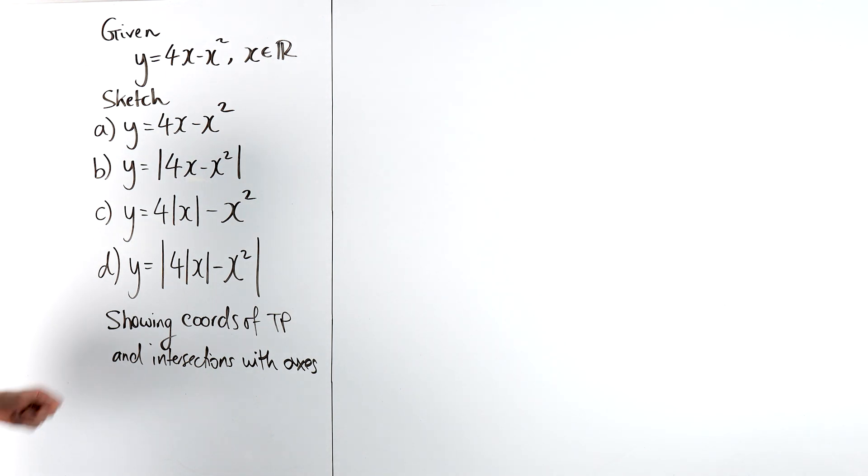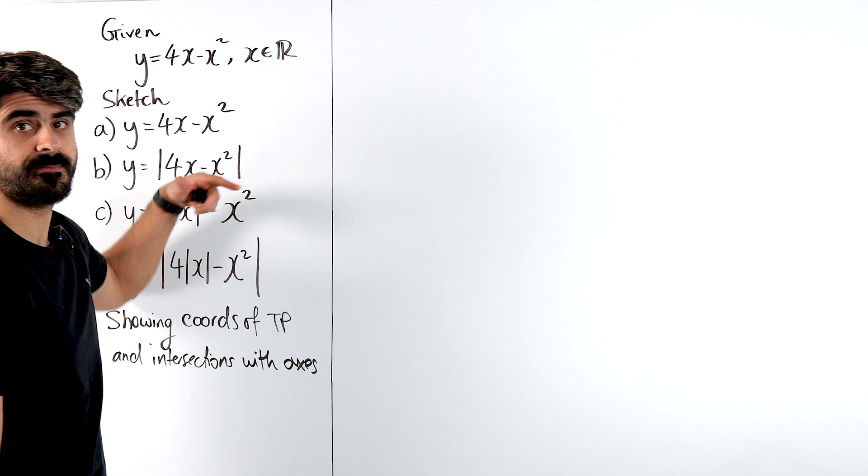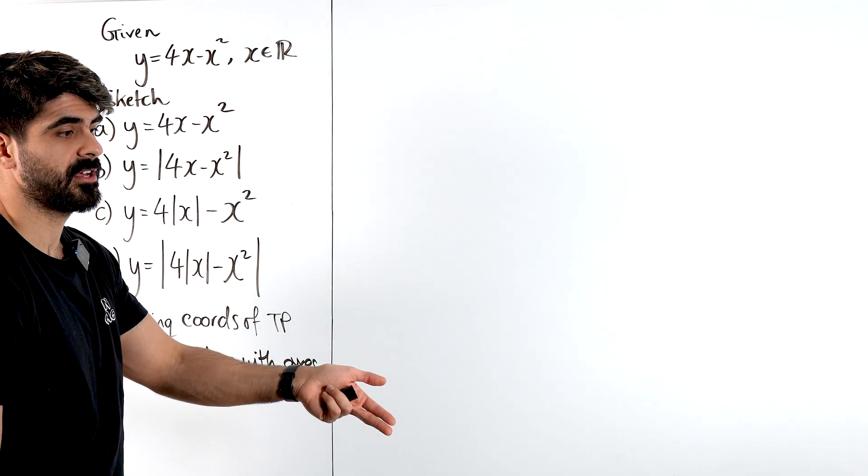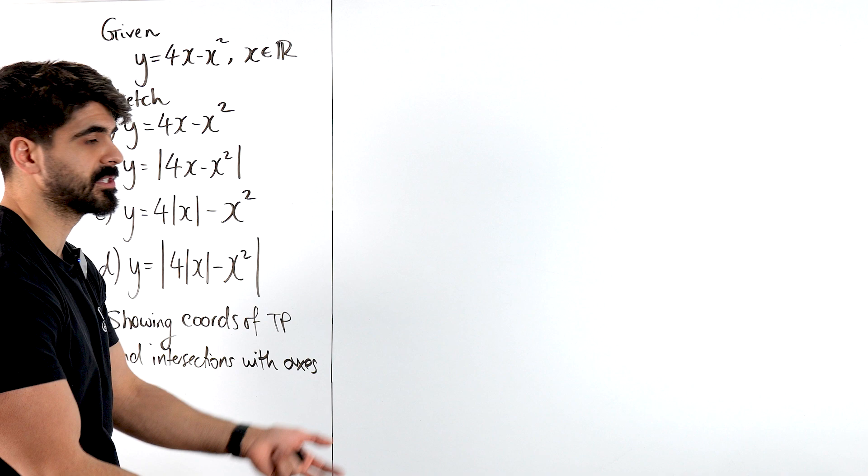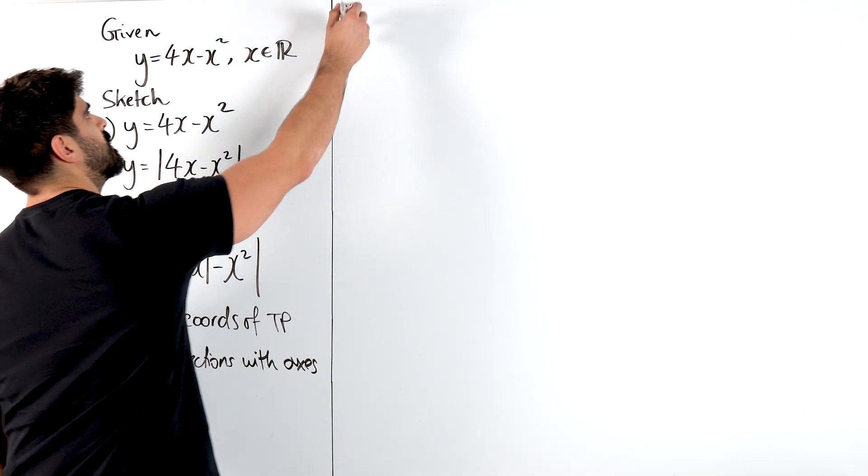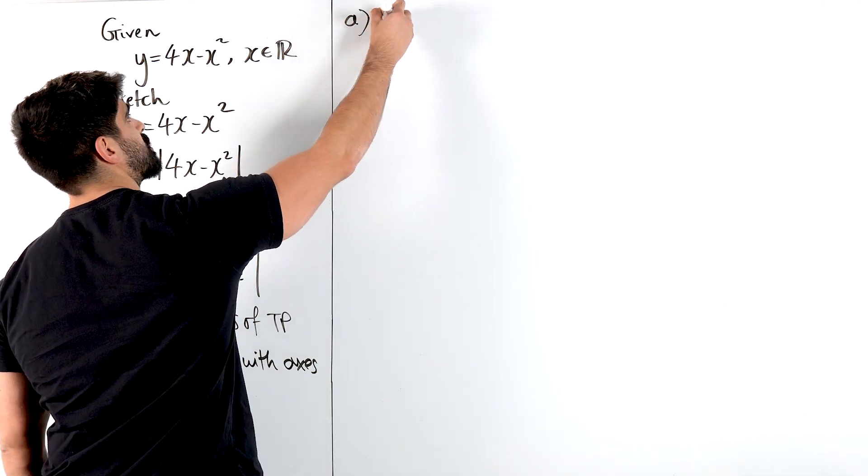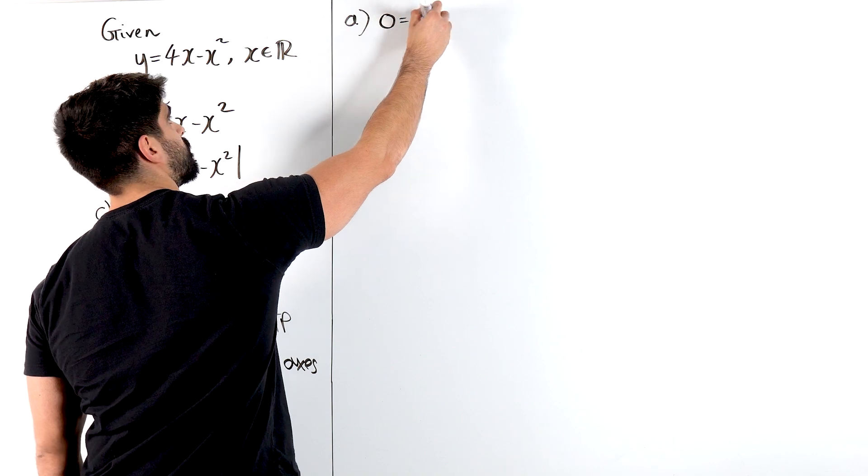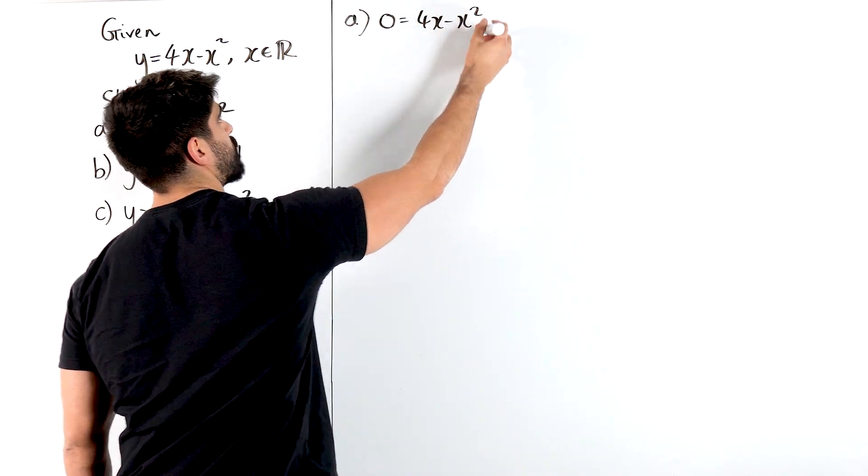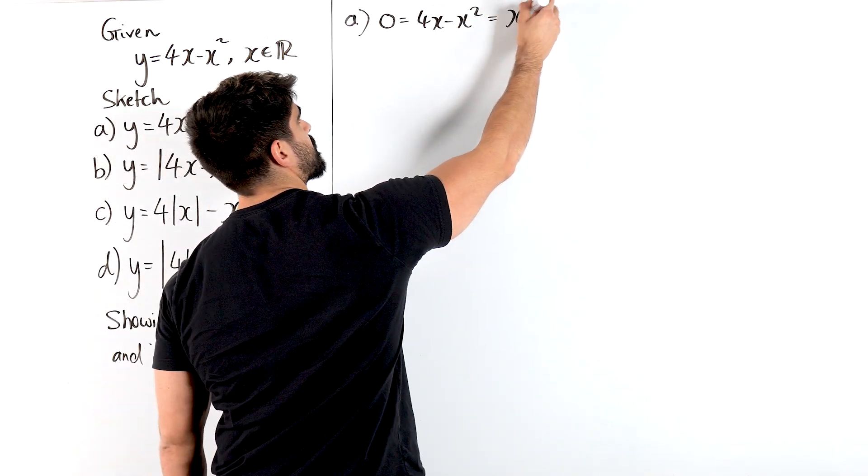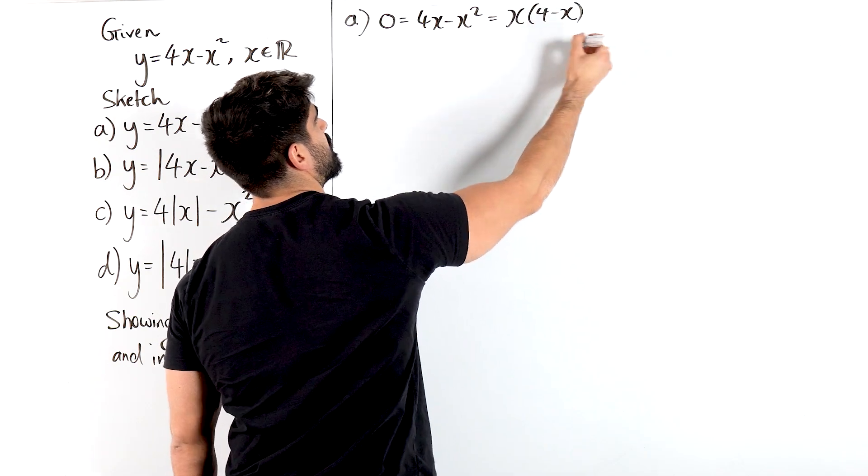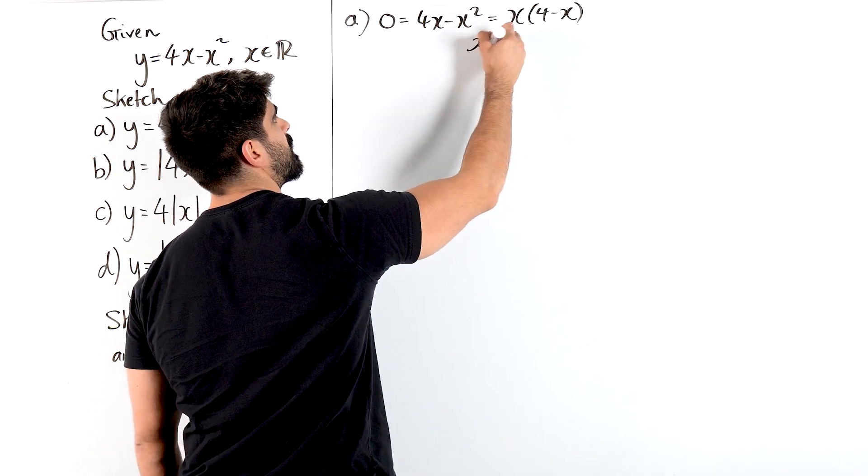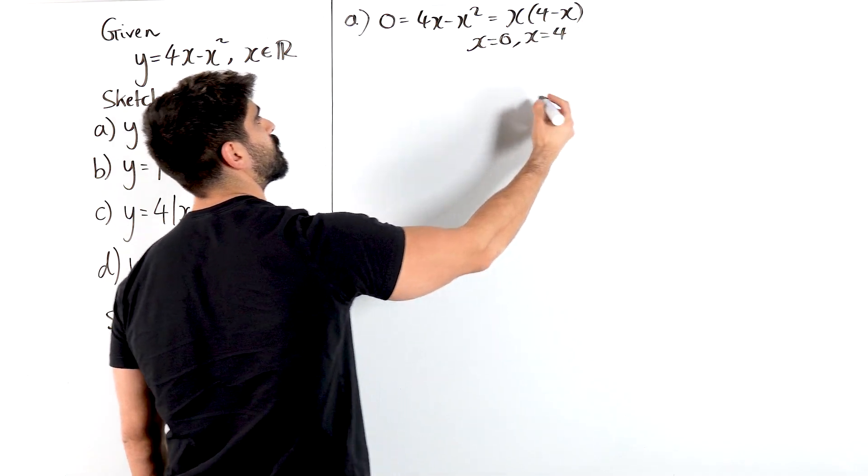Might as well find the roots. You can already see there's no plus c, meaning that it crosses the x-axis and the y-axis at the same place, 0. So just doing that a bit quickly, let's just make y equals 0. We get 4x minus x squared. Factorize out the x, 4 minus x. So you can clearly see that the roots are x equals 0, x equals 4.